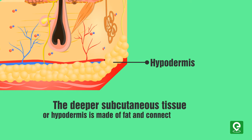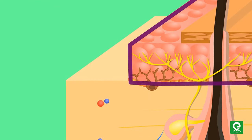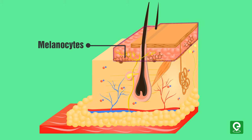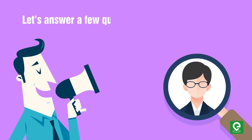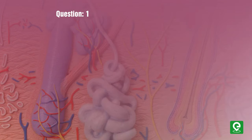The dermis lies on subcutaneous tissue or panniculus, which contains small lobes of fat cells known as lipocytes. The deeper subcutaneous tissue, or hypodermis, is made of fat and connective tissue. The color of skin is created by special cells called melanocytes, which produce the pigment melanin. Melanocytes are located in the epidermis.